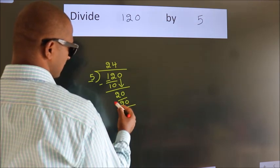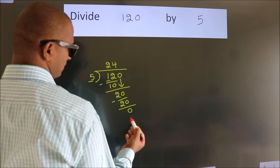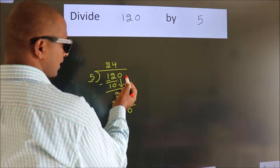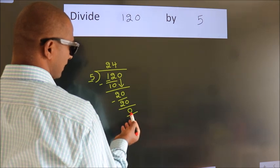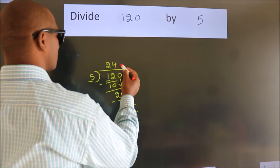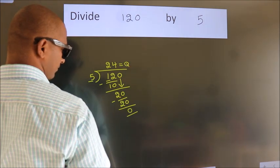Now we subtract and we get 0. After this, no more numbers to bring down, and we got remainder 0. So this is our quotient.